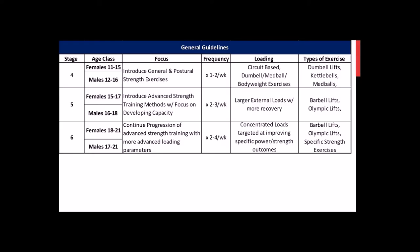Once athletes have matured and ideally gone through puberty, they're hormonally ready and have the capacity to adapt to more serious strength training. Now it's appropriate to introduce more advanced methods focusing on developing the top tier of the pyramid — increasing how much they can lift and how fast they can lift. Starting frequency is two to three times per week, moving away from circuit-based training toward barbell and Olympic lifting with more recovery.